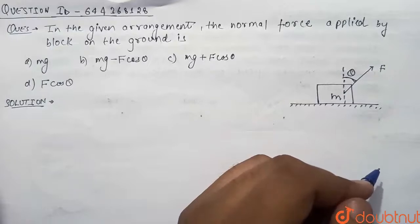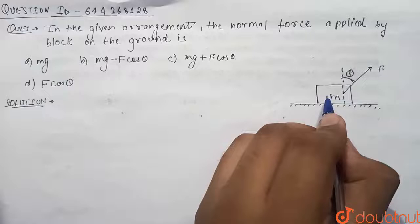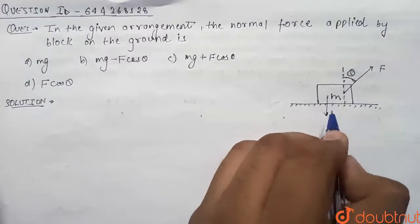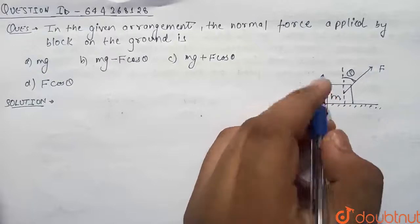So guys, see here in this diagram, the weight of block m will be acting downward, that is mg, and the normal force will be acting upward N.